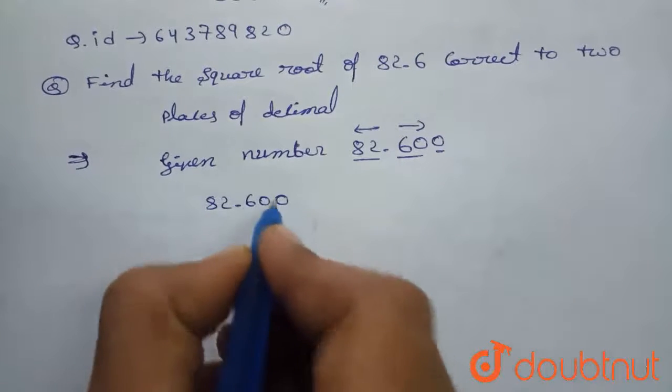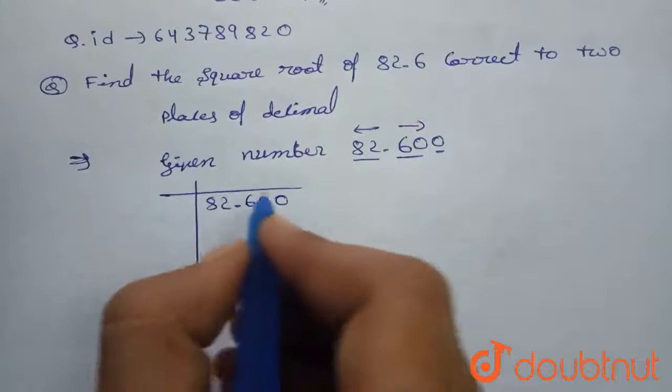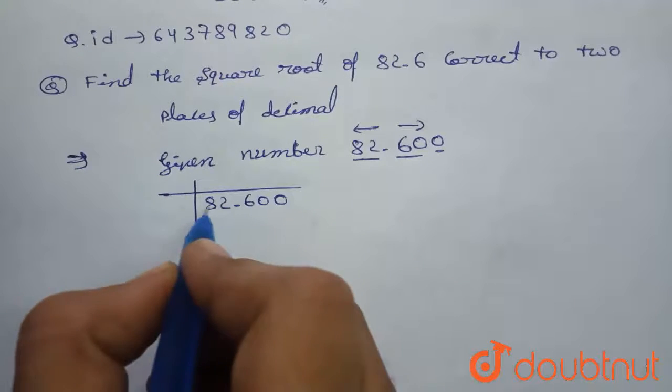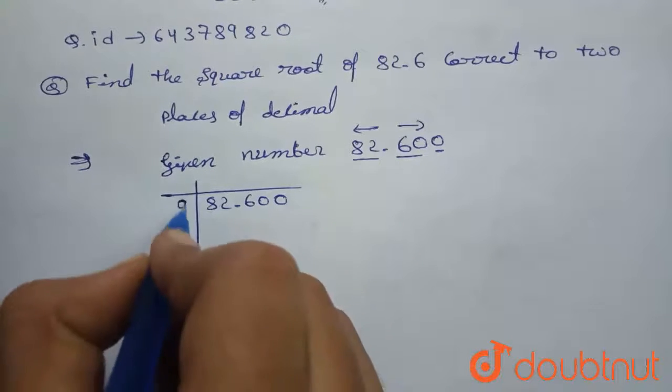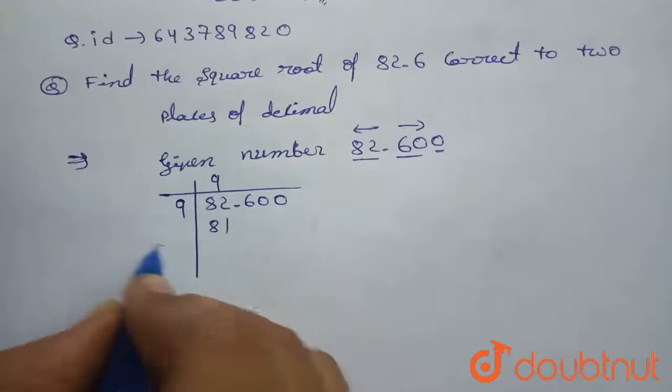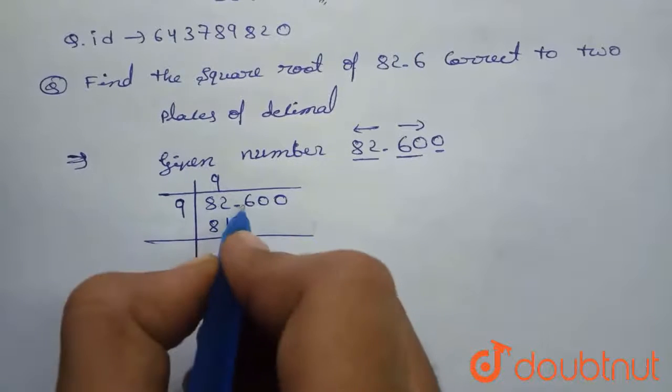82.600. 82 is nearest to 81, therefore 9 into 9 is 81. We will get 1, there will be decimal.